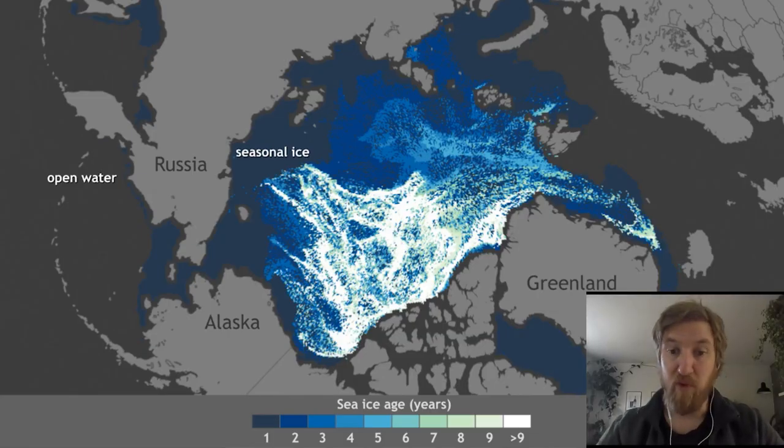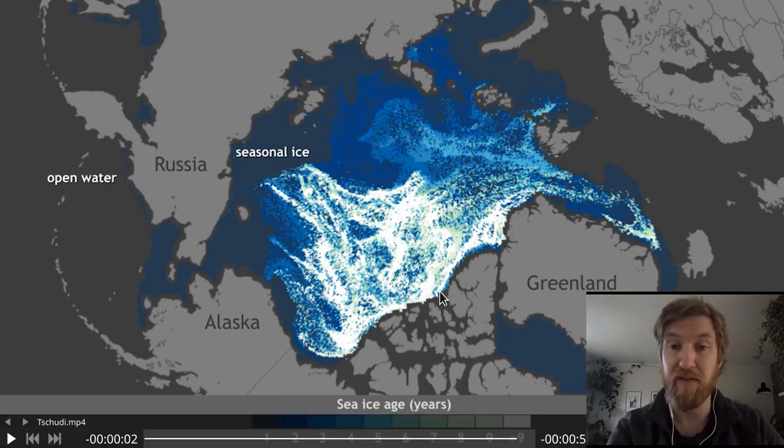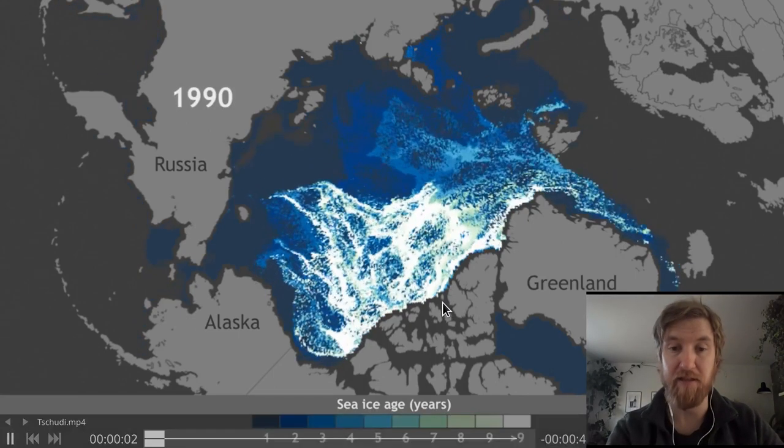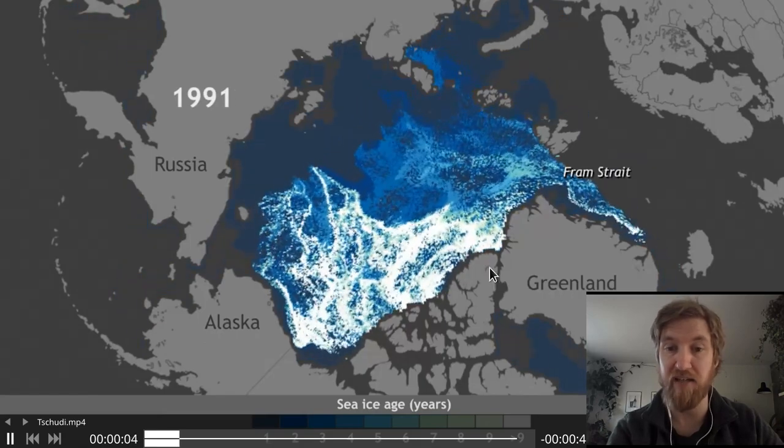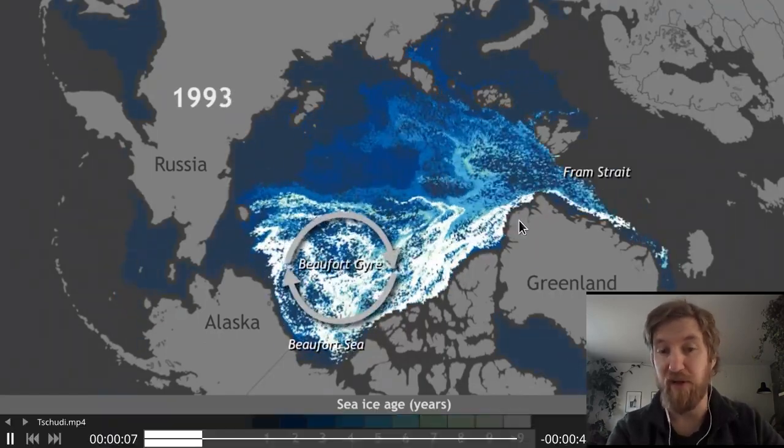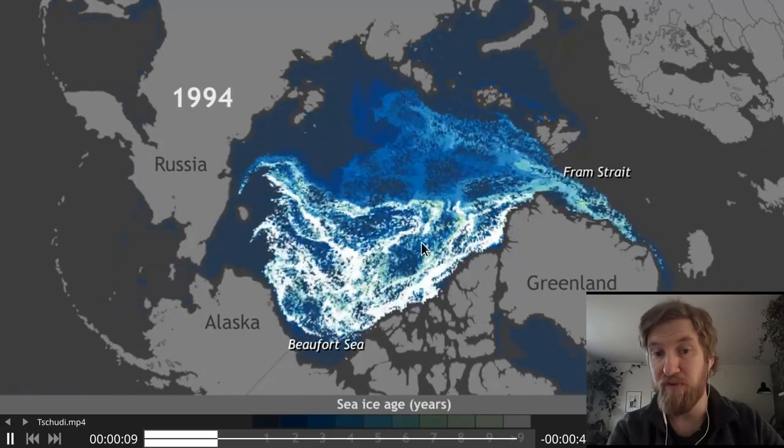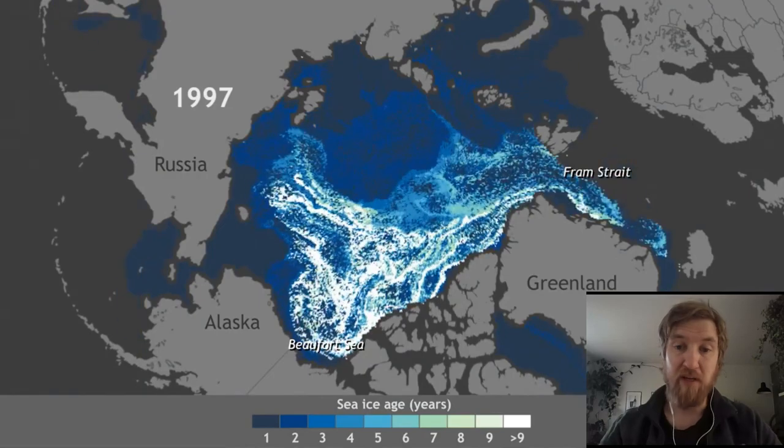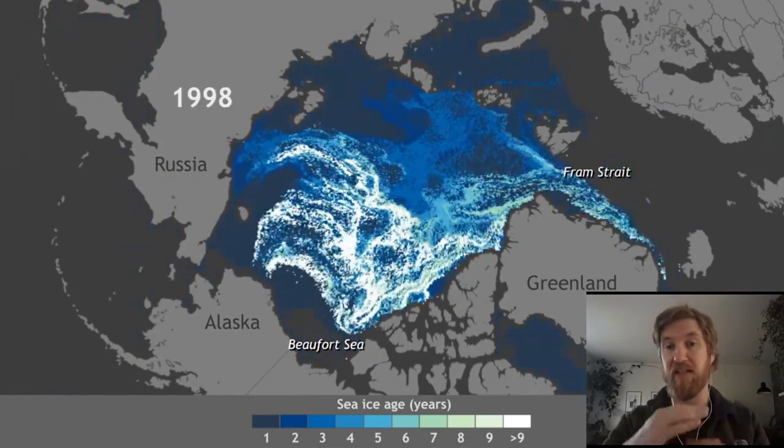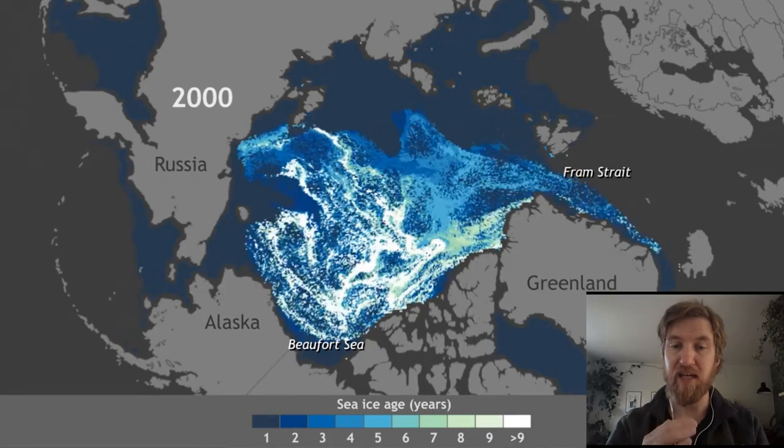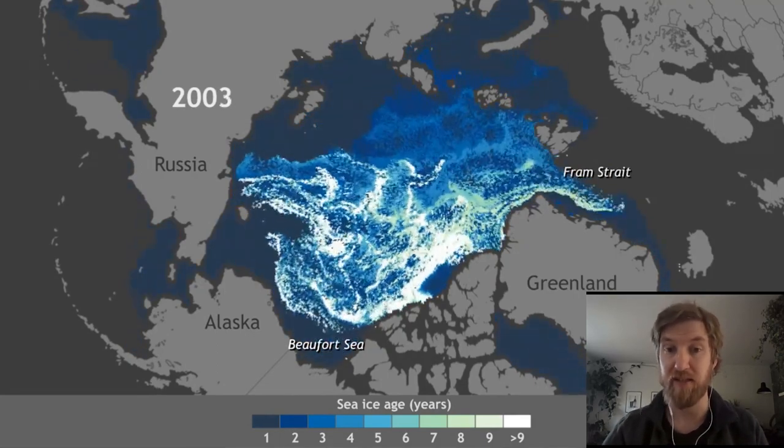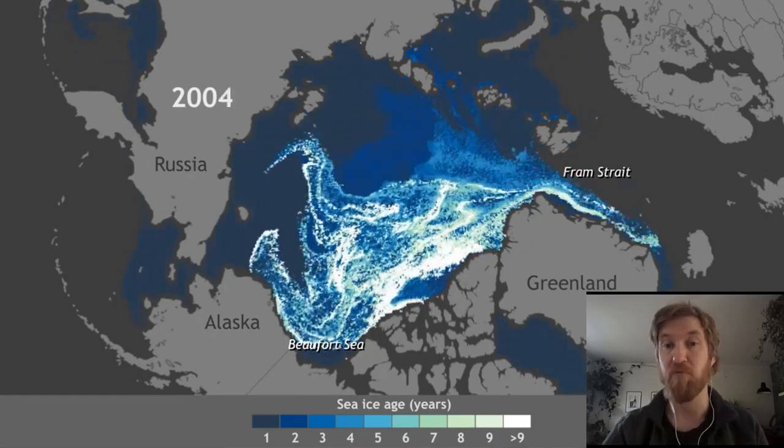Sea ice ridging is an important process as soon as we have compression or shear. For the Arctic ice pack, compression and shear in particular happens against the northern coasts of Canada and Greenland, where the large-scale atmospheric patterns move ice against these land boundaries. The ridging process acts to increase the ice thickness, and as soon as we have a thick ice pack, the ice pack proves to be resilient during summer melting events. So thick ice is resilient ice.